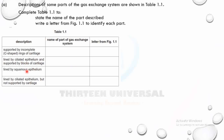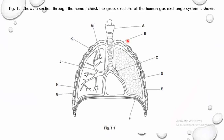Lined by squamous epithelium — squamous means thin or flattened — so that describes the gas exchange surface, which is the alveolus. 'Lined by ciliated epithelium but not supported by cartilage' — that should be the bronchiole. So let's go back and find out which letter is trachea, bronchus, alveolus, and bronchiole.